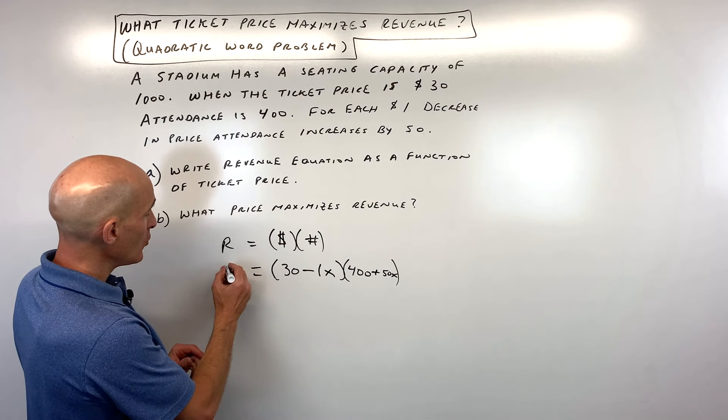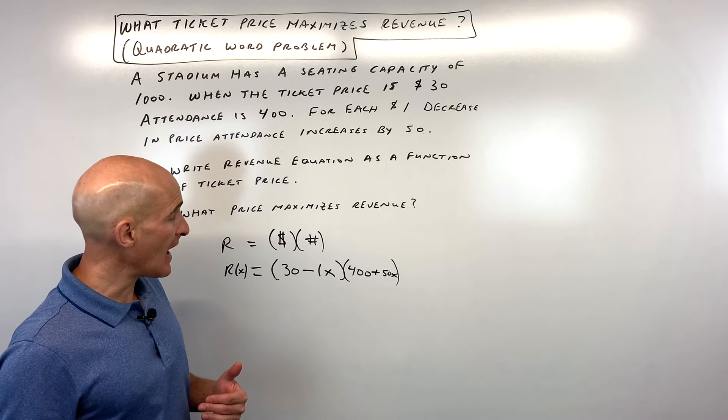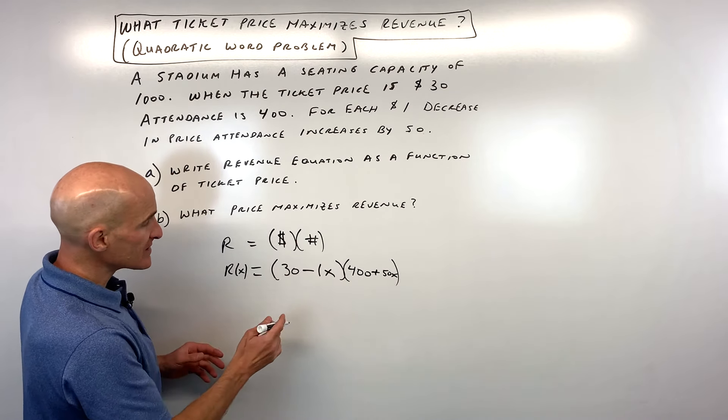Okay, so now we have our revenue equation as a function of x, the number of decreases in the price by one dollar. But let's go ahead and foil this out.